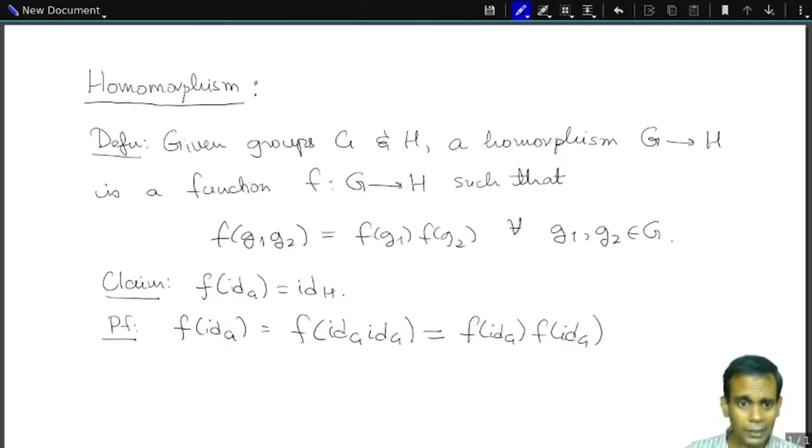So F of identity of G is an element of H. And this element has a property that it is equal to what you get when you multiply it by itself. And now remember, in groups, you have this cancellation property. So this implies that F of identity of G is equal to identity of H. You just cancel out this here with this here.